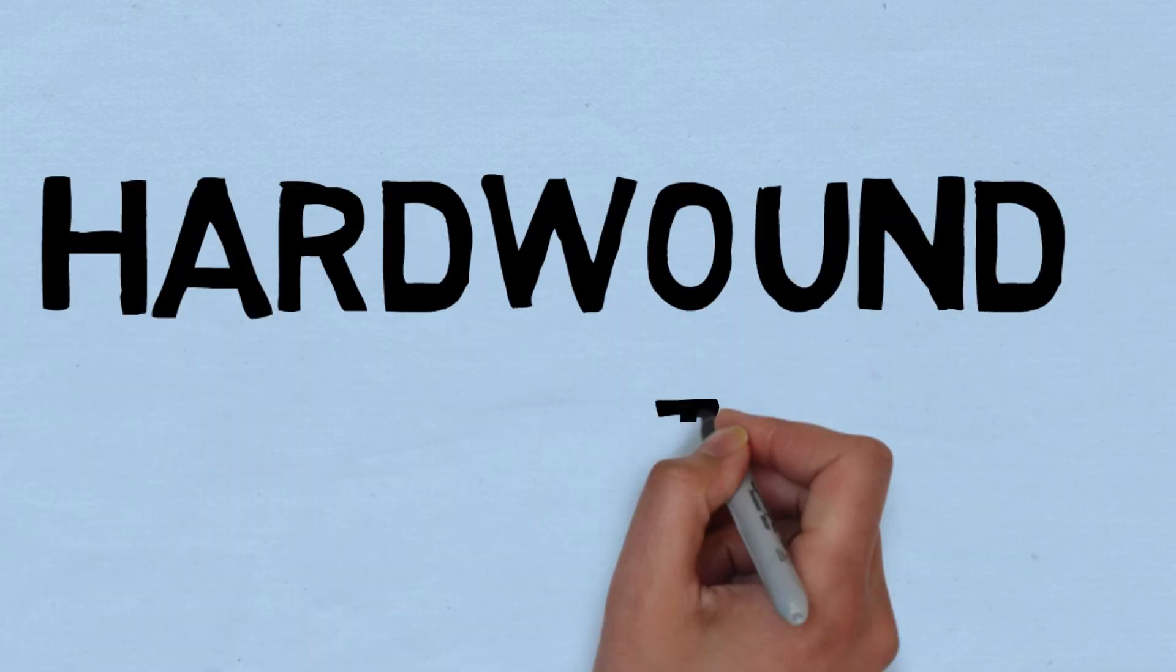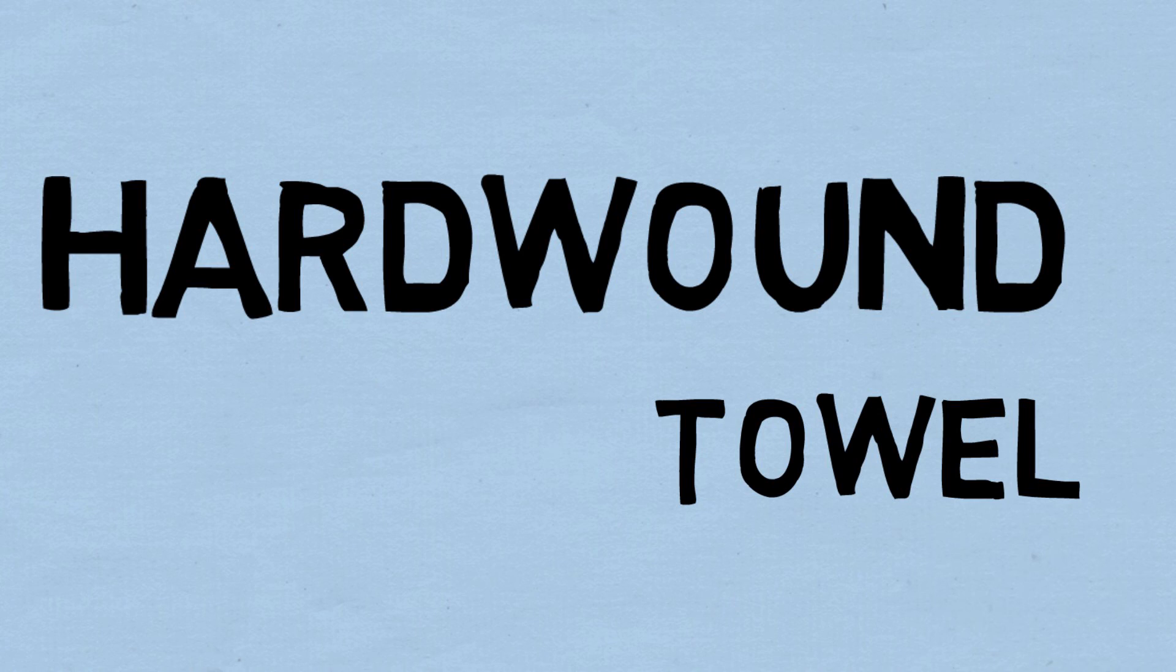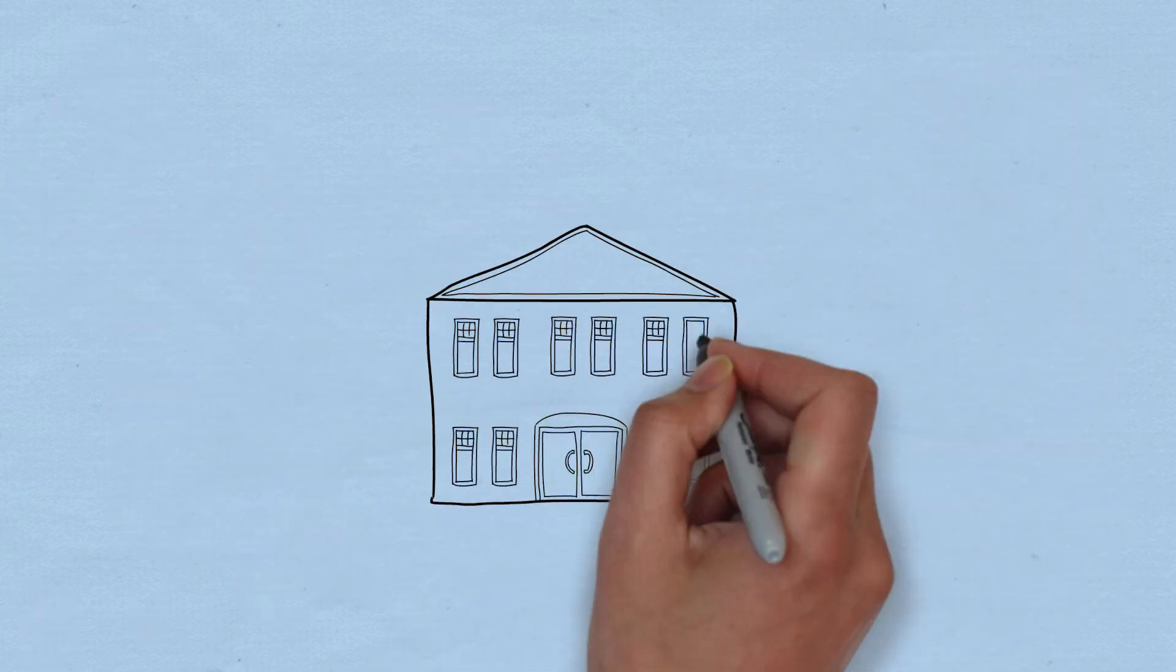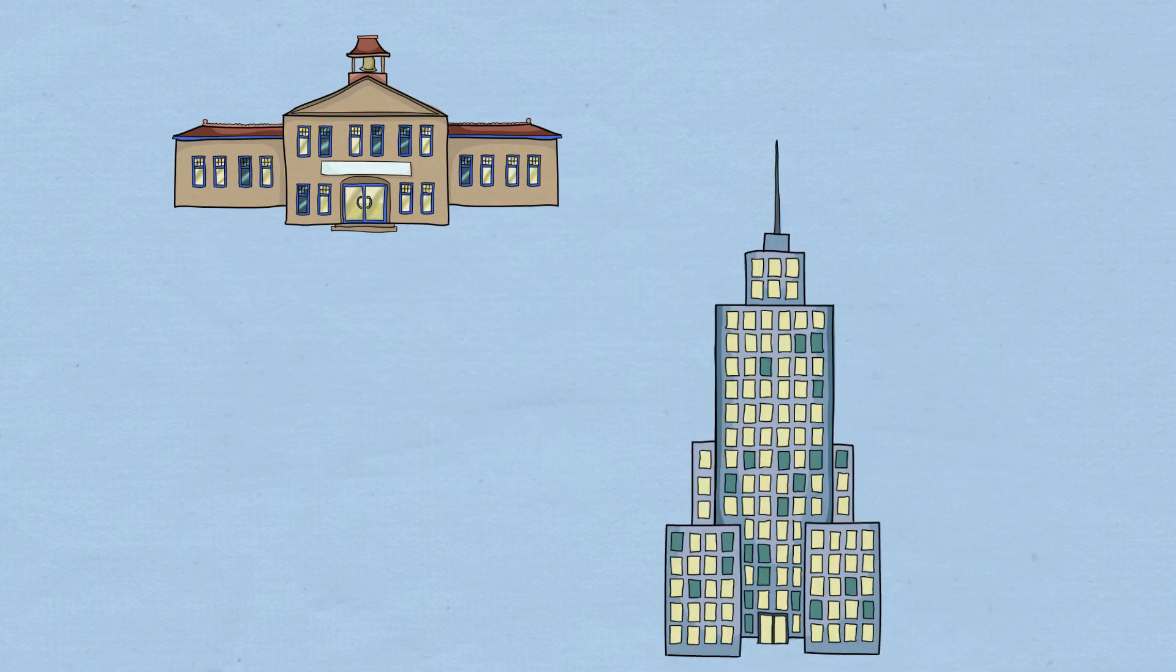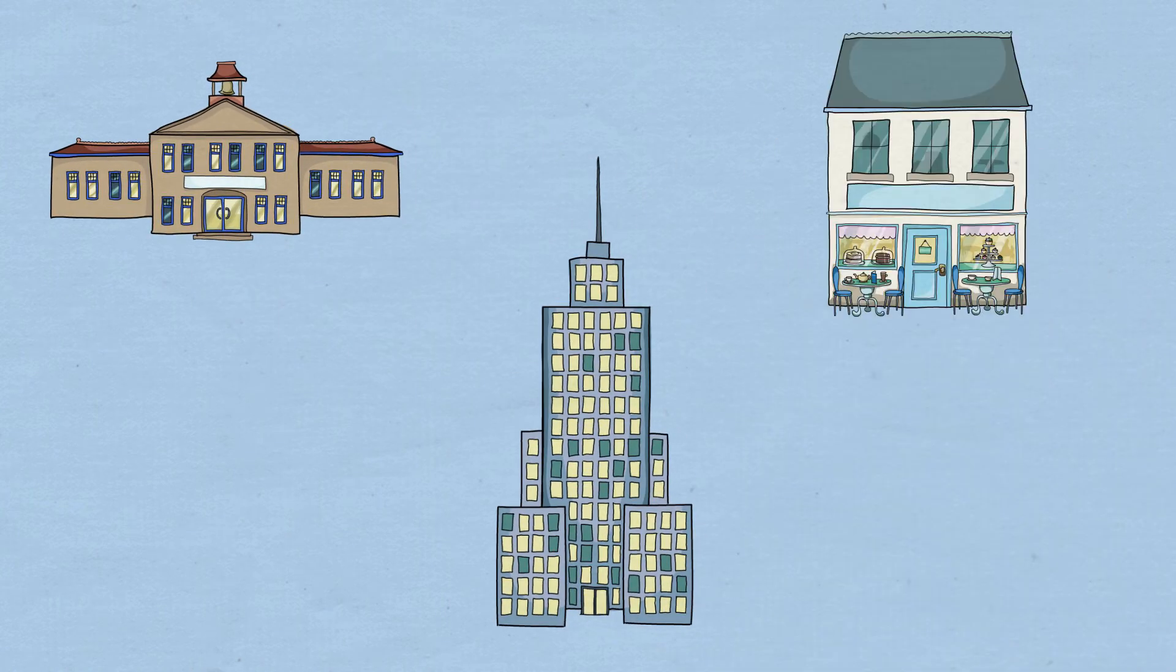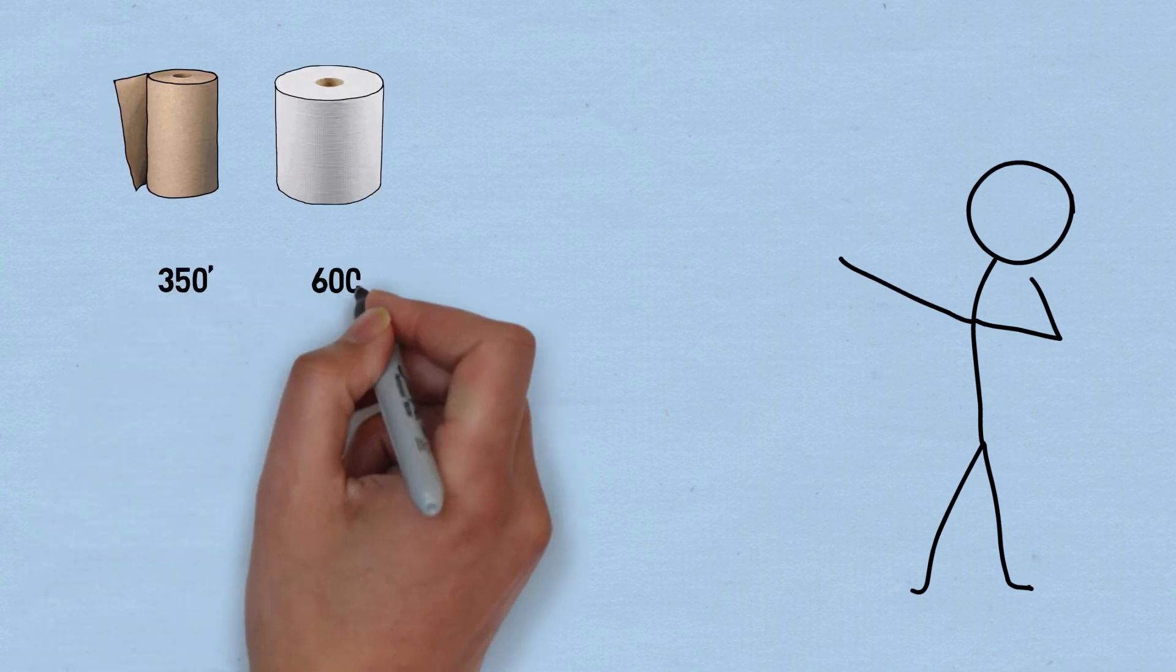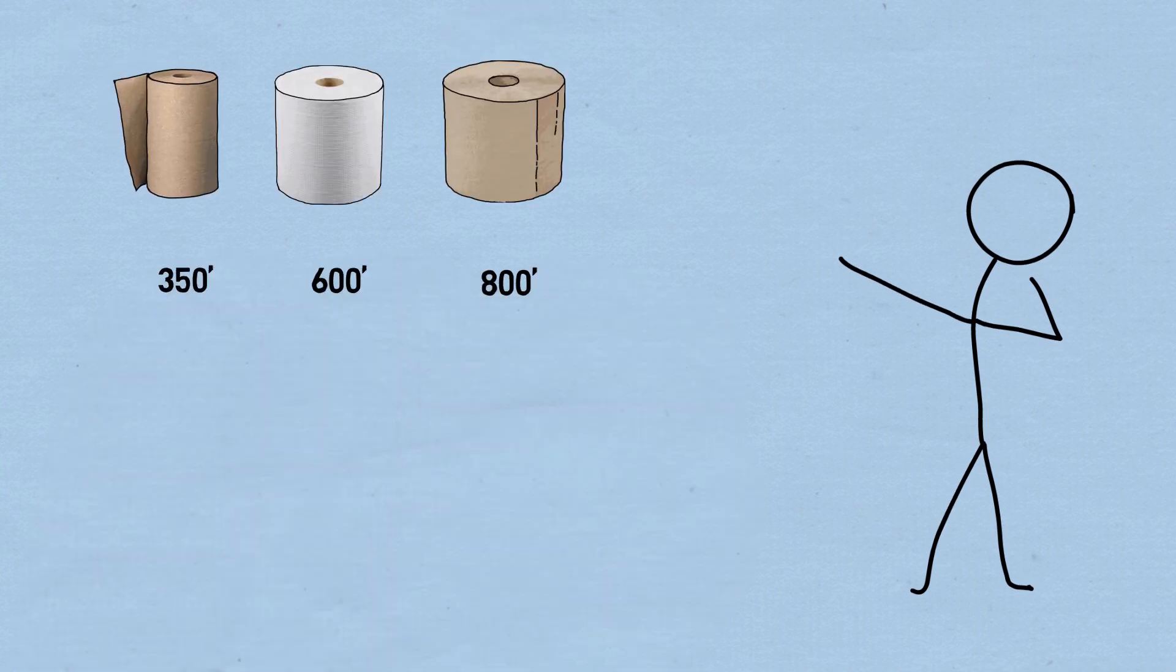Apart from folded towel, we also have rolled towel. Hardwound towel is a more densely rolled, high-capacity option that you'll find in schools, office buildings, public restrooms, and throughout the food service industry. These rolls typically come in lengths of 350, 600, 800, and 1,000 feet.